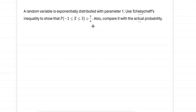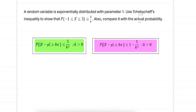We will first compute the approximate values using Chebyshev's inequality. We have two formats of Chebyshev's inequality, and we need to see which one is more appropriate for the given problem. The two formats are: probability of |x minus mu| greater than or equal to k sigma, and probability of |x minus mu| less than or equal to k sigma. Since the problem requires a less than or equal to quantity with a greater than or equal to bound, the second inequality suits better. So we are going to opt for the second inequality.